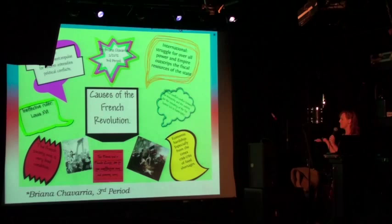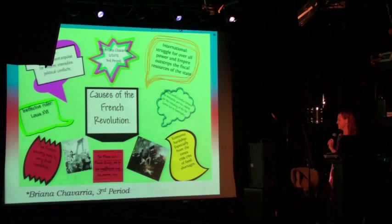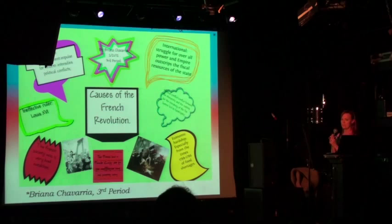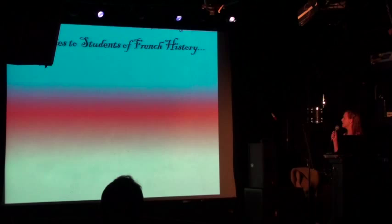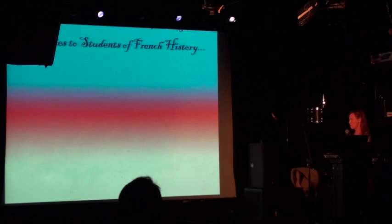Just in case anybody wants any more background, I found this online. It's by Brianna Chevaria from Third Period. You can see that they have an ineffective ruler, Louis XVI, as well as an ineffective king on the bottom there. So that should give you, if you want, a little background. I don't know Brianna, but anyway, that's good. Apologies if she's here. So let's just do a very quick timeline of the French Revolution.